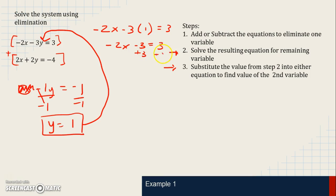I can add 3 using inverse operations. And I end up with negative 2x equals 6. I can divide by negative 2 using inverse operations. And I have x equals negative 3. So I found the x value. I found the y value.